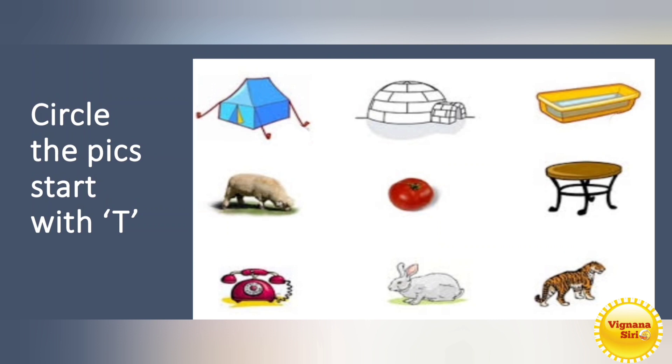Circle the picture that starts with T. Shall we start? What is the first one? What is this? Tent. So T for tent. Circle. This is igloo, right? It is in the ice.